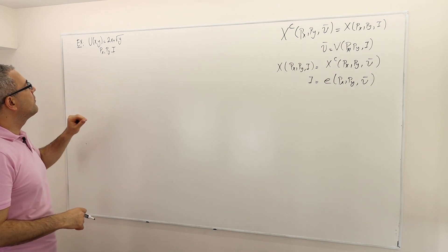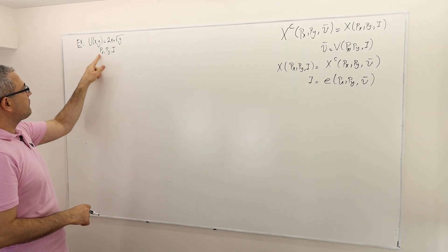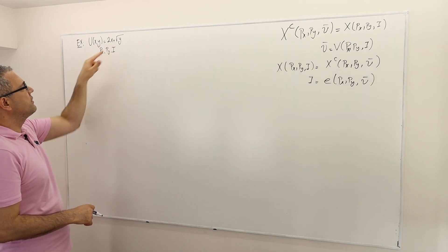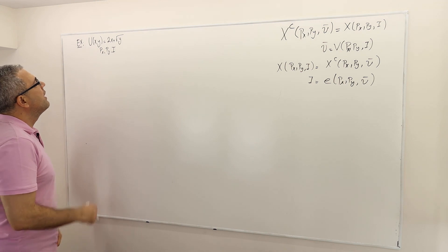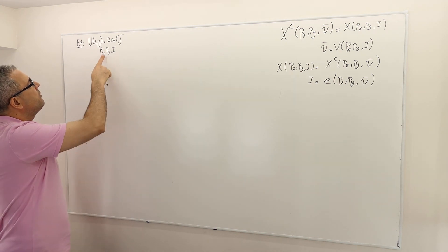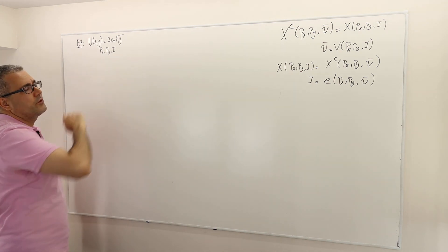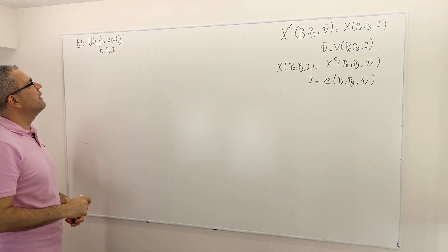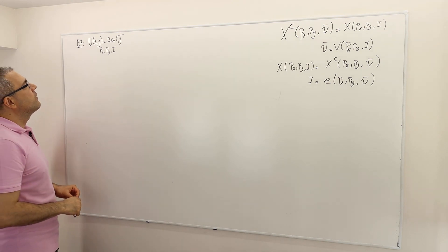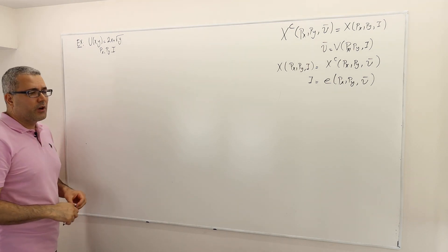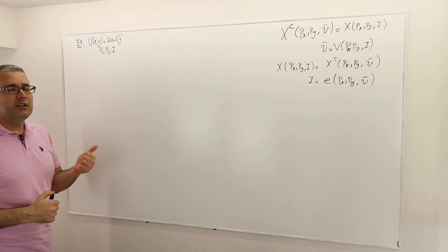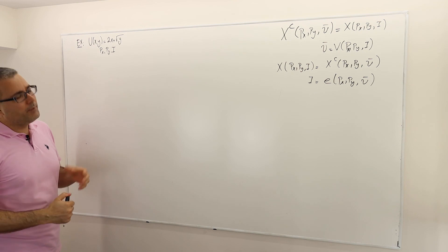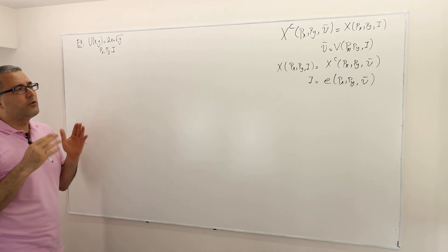In this example I have two goods. The utility function is 2X plus square root of Y, assuming the price of good X and PY are given, and income is I. First, I'm going to derive the optimal demands for good X and good Y by the utility maximization problem.